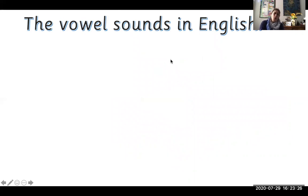Now, do you know how many vowel sounds are in English? Well, we do know that we have these five: a, e, i, o, u.